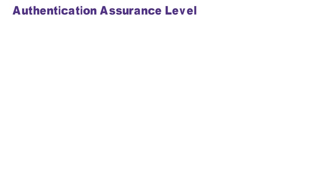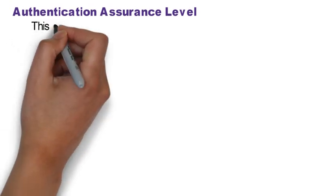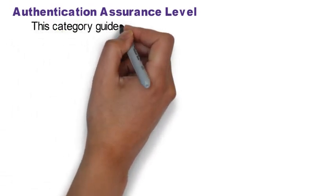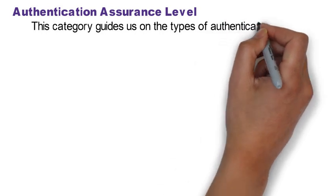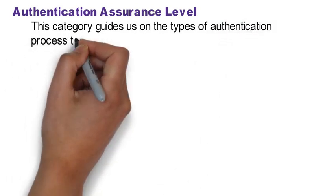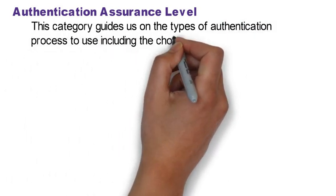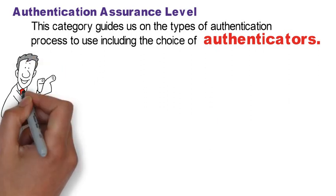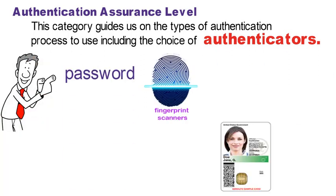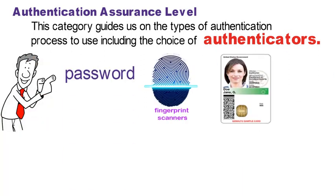AAL stands for Authentication Assurance Level. This category guides us on the type of authentication process to use, including the choice of authenticators. An example of an authenticator can be a password, fingerprint scanner, or a PIV card.